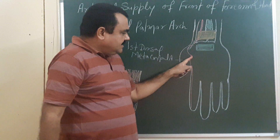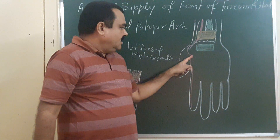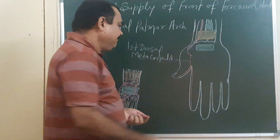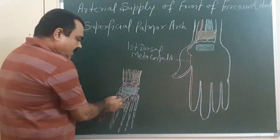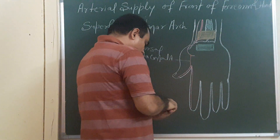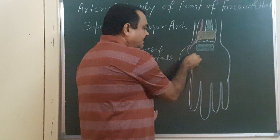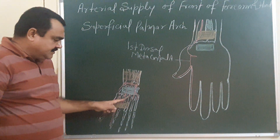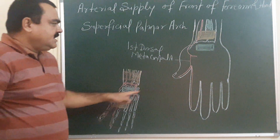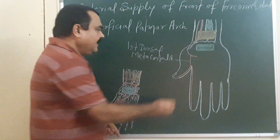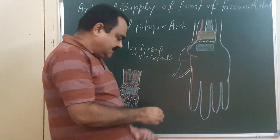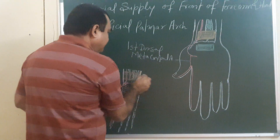After giving this branch, it reaches between the two heads of the first dorsal interossei. After crossing the two heads of the dorsal interossei, it again reaches deep to the oblique head of the adductor pollicis, reaching princeps pollicis.